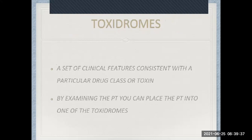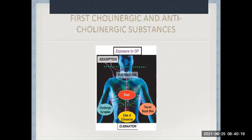A toxidrome is a set of clinical features consistent with a particular drug class or toxin. To put it simply: a flu is characterized by a runny nose, sore throat, blocked ears, headaches, fever, and cough. If somebody comes in with a swollen left ankle, your diagnosis is not flu. It's the same with toxins — by examining your patient you can place them into a toxidrome. The first toxidrome we're going to look at is cholinergic and anticholinergic substances.